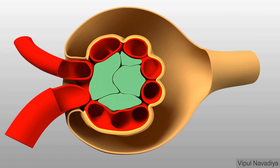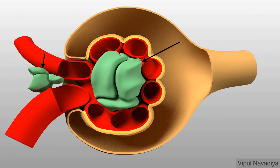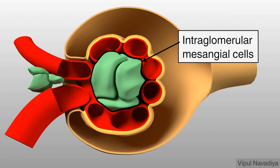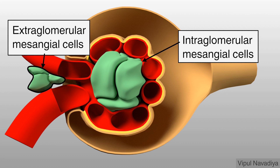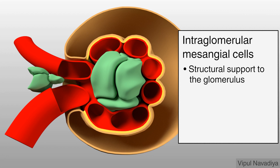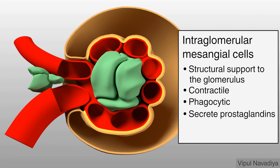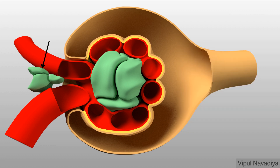Now let's see each component one by one. First, the mesangial cells. They can be divided into two groups: intraglomerular mesangial cells, lying within the glomerulus, and extraglomerular mesangial cells, which lie outside the glomerulus. Intraglomerular mesangial cells provide structural support to the glomerulus and are contractile. By contraction and relaxation, they can alter the total surface area available for glomerular filtration, and thereby regulate the rate of glomerular filtration. They also have phagocytic activity and secrete prostaglandins and extracellular matrix. Extraglomerular mesangial cells are part of the juxtaglomerular apparatus.